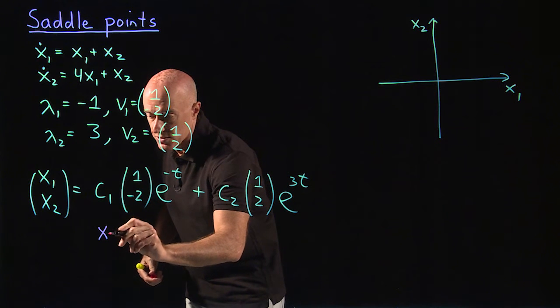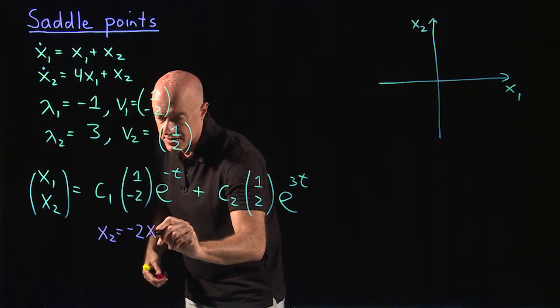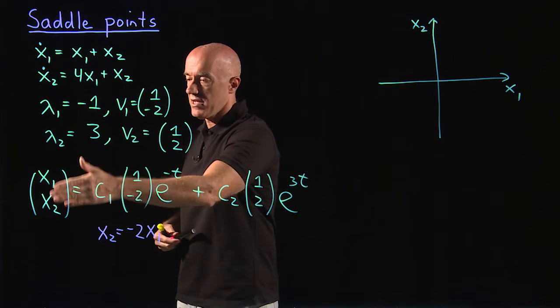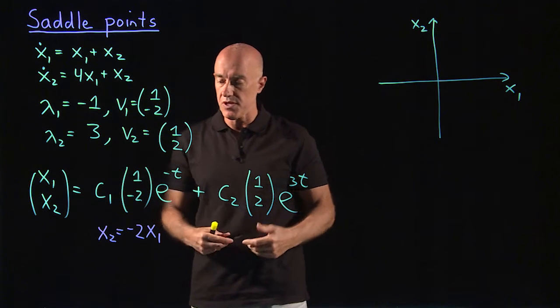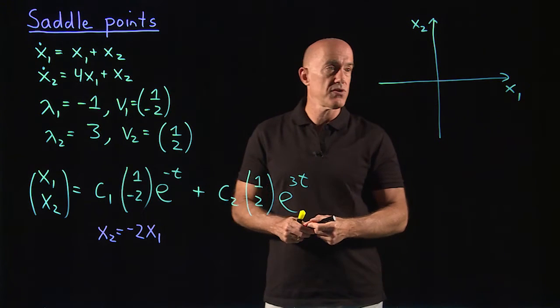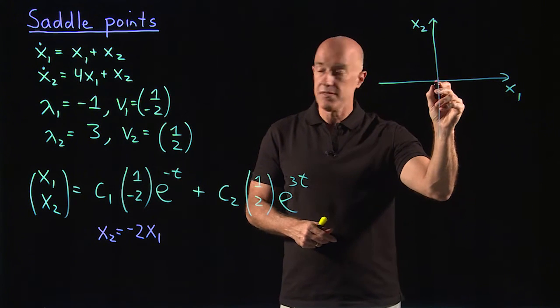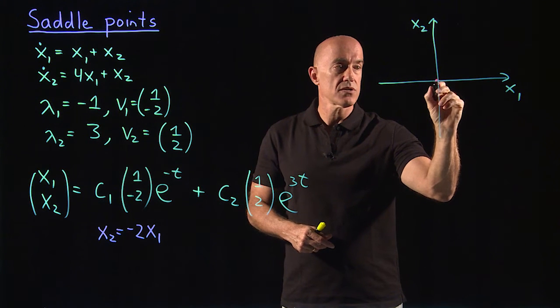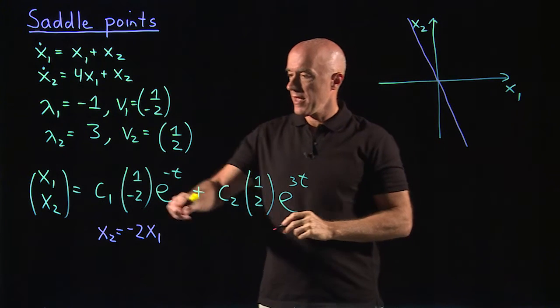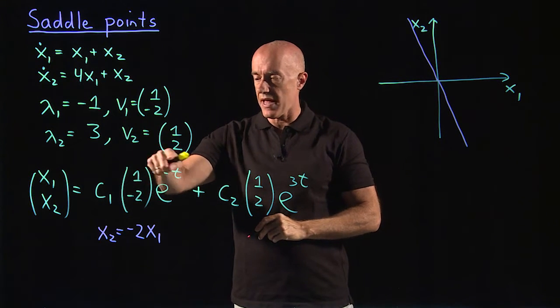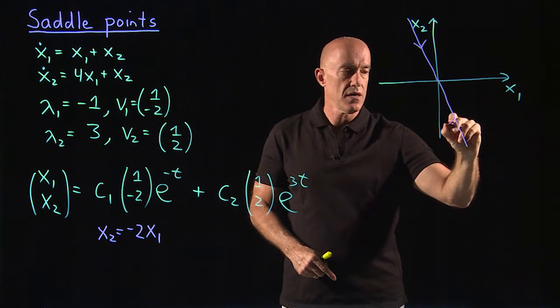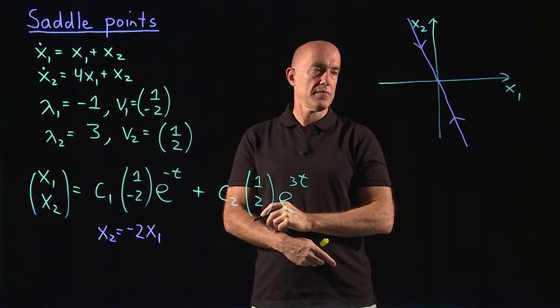So here x2 is minus 2 times x1, because this is the vector. 1 minus 2 is the vector. x1, x2 is the vector. So we always have this relationship. This is a line of slope minus 2, steeper than minus 1. So it looks something like this. And the solution is decaying along that line as e to the minus t. So we're going into the fixed point along this line.